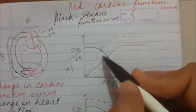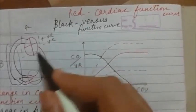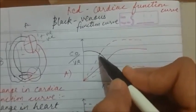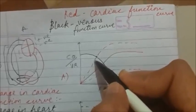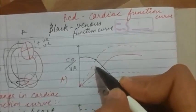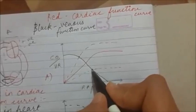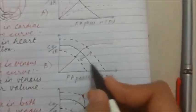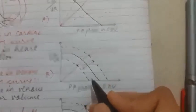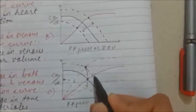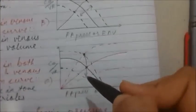Remember: any change only in the cardiac function curve is always related to the heart. Examples include catecholamines and digoxin, which have a positive inotropic effect and cause the cardiac function curve to move to the left. Negative inotropy — like heart failure or narcotic overdose — causes the cardiac function curve to move to the right. Change only in the vascular function curve is related to venous tone or blood volume. Change in both curves is always related to arterioles and total peripheral resistance.